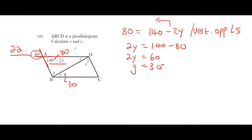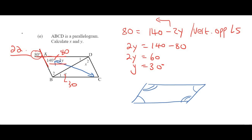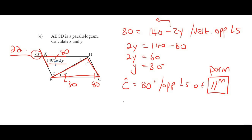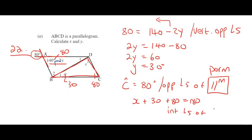There are multiple ways to find X, but since this is a parallelogram, we know the opposite angles are equal. So angle C equals 80 degrees — because these are opposite angles of a parallelogram. Some teachers abbreviate this as 'palm' for parallelogram; do whatever your teacher requires. Now summing the three angles in the triangle: X plus 30 plus 80 equals 180 degrees, because of the interior angle sum of a triangle. Solving gives X equals 70 degrees.